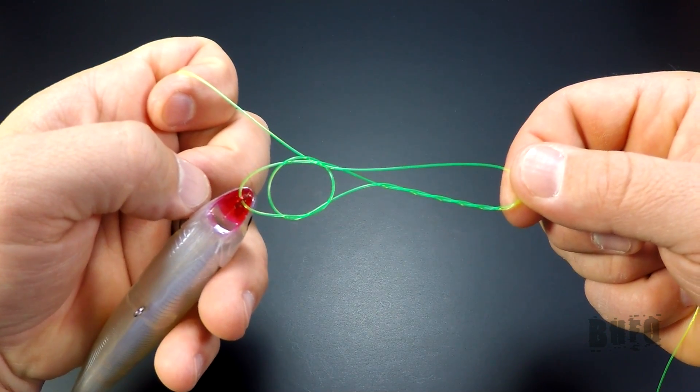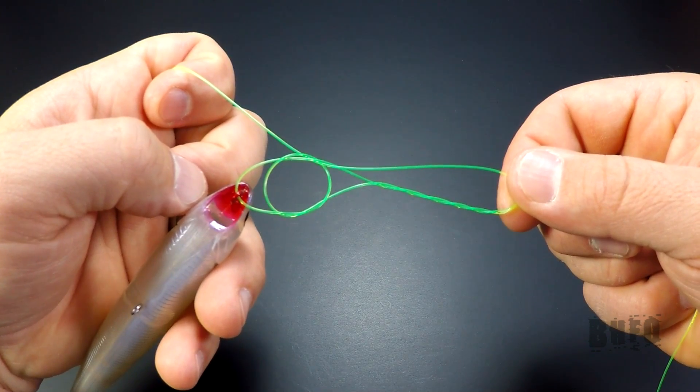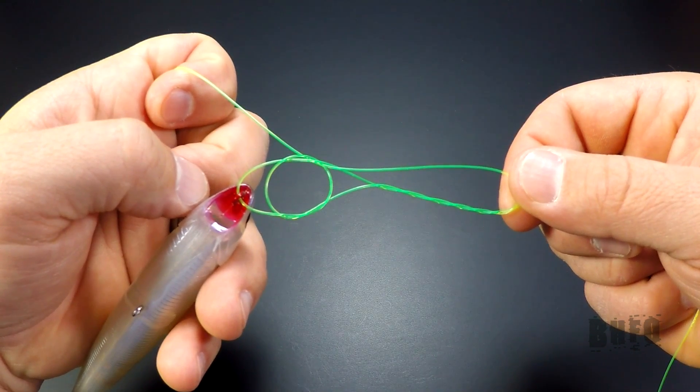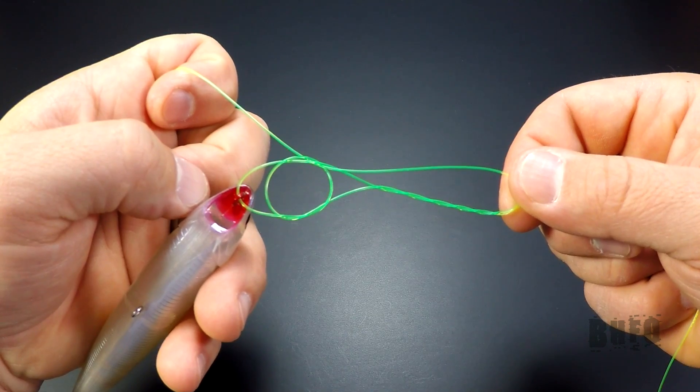Now, it's very important when tying fishing knots to lubricate the line before cinching up. The reason is, friction could cause line burn and weaken or damage the line, so always lubricate your knots. The best way is to run the knot through your mouth and use saliva.